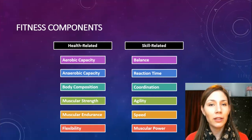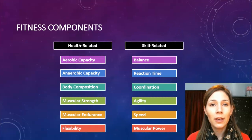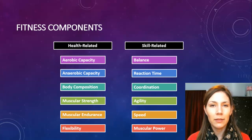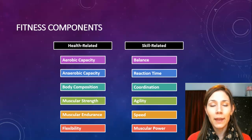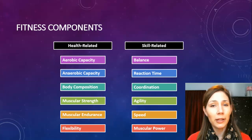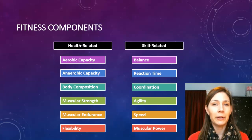First up are the health-related fitness components: aerobic capacity, anaerobic capacity, body composition, muscular strength, muscular endurance, and flexibility. And the skill-related fitness components are balance, reaction time, coordination, agility, speed, and muscular power.